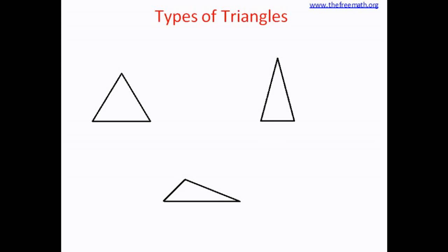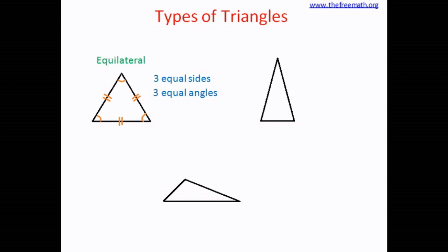Let's learn different types of triangles. You can see three triangles here, and they look different. In the first triangle, the one on the left hand side, you can see that the three sides are equal. And when the three sides are equal, the three angles are also equal. Such kind of triangle is called an equilateral triangle.